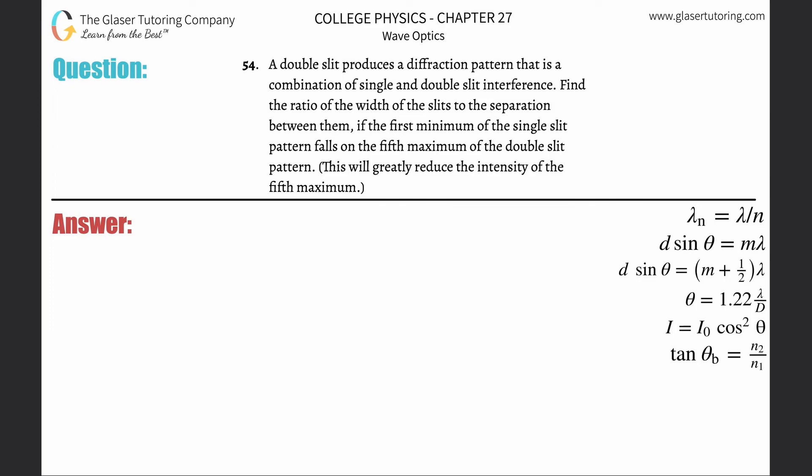Number 54. A double slit produces a diffraction pattern that is a combination of single and double slit interference. Find the ratio of the width of the slits to the separation between them, if the first minimum of the single slit pattern falls on the fifth maximum of the double slit.